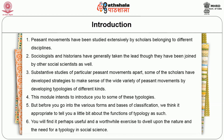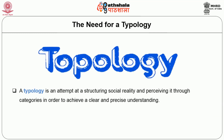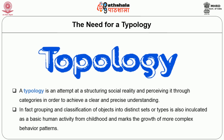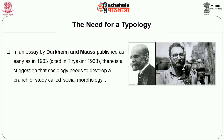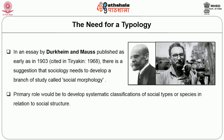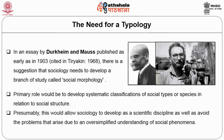The need for typology. A typology is an attempt at structuring social reality and perceiving it through categories in order to achieve a clear and precise understanding. In fact, the grouping and classification of objects into distinct sets or types is inculcated as a basic human activity from childhood and marks a growth of more complex behavior patterns. In an essay by Durkheim and Mauss published as early as 1903, there is a suggestion that sociology needs to develop a branch of study called social morphology, whose primary role would be to develop systematic classifications of social types or species in relation to social structure. Presumably, this would allow sociology to develop as a scientific discipline and avoid problems that arise due to oversimplified understanding of social phenomena.